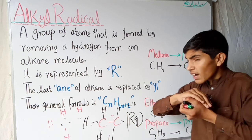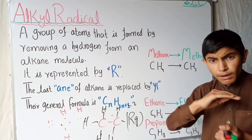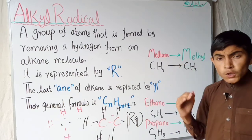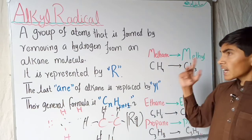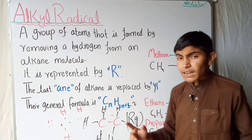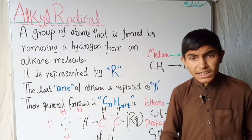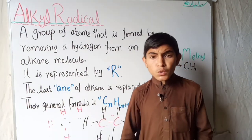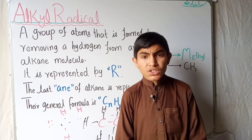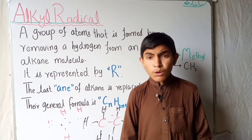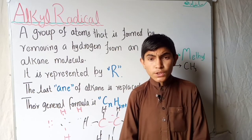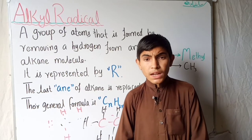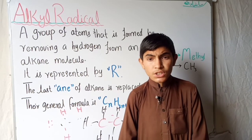So this was all about the alkyl radical — it is formed by removing a hydrogen atom from an alkane, giving us the alkyl radical. This was about the alkane. I hope this lecture was helpful to you. If you have any doubt or question, please mention it in the comments, and please subscribe and share for the next video.